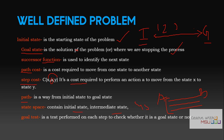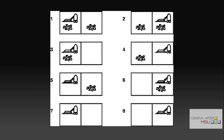The goal test checks whether a newly reached state is a goal state or not. It is a binary test that returns either true or false. Now we will discuss a few problems to make each of these terms very clear.